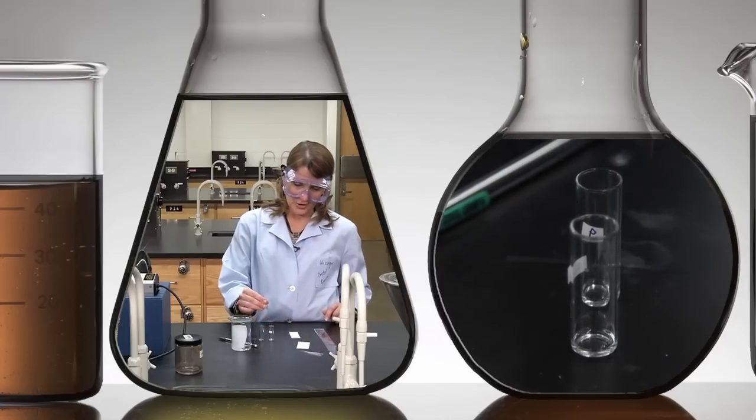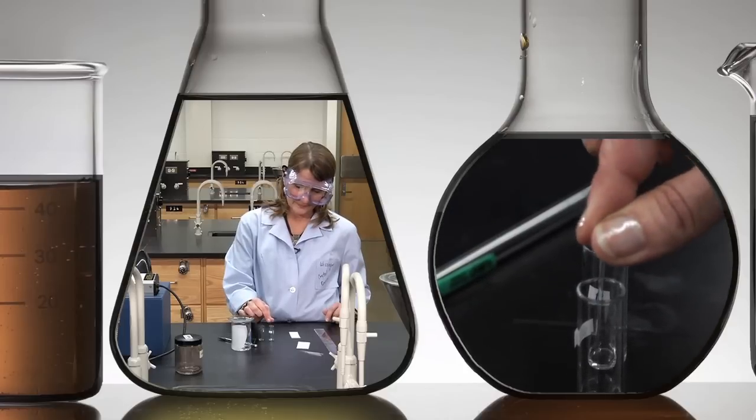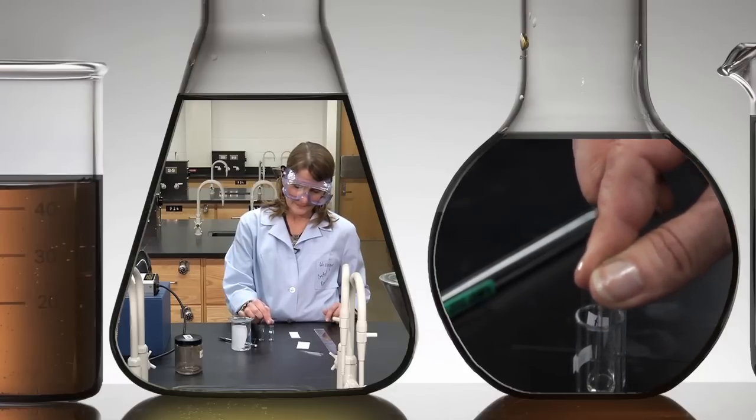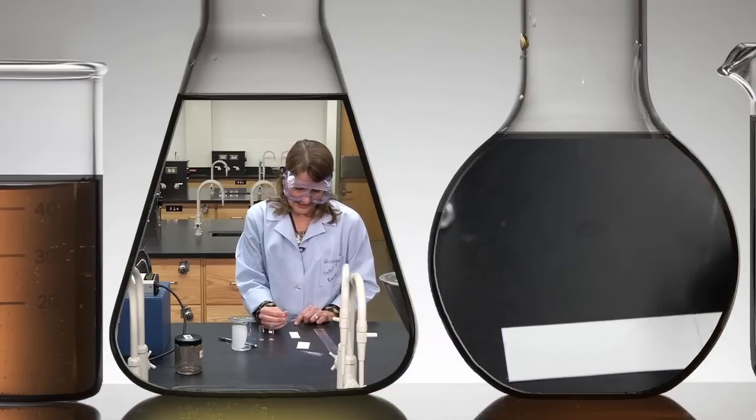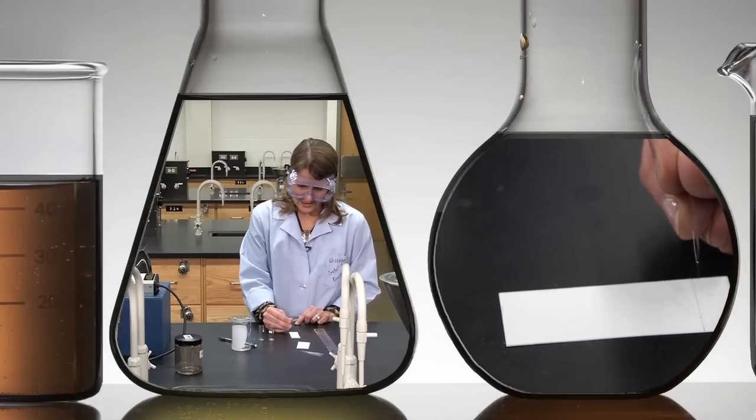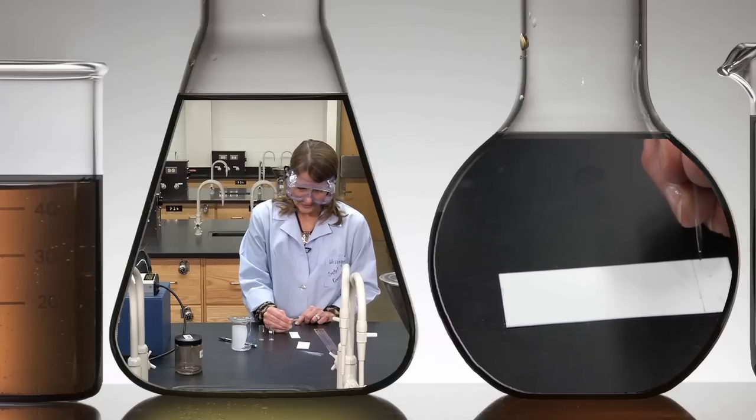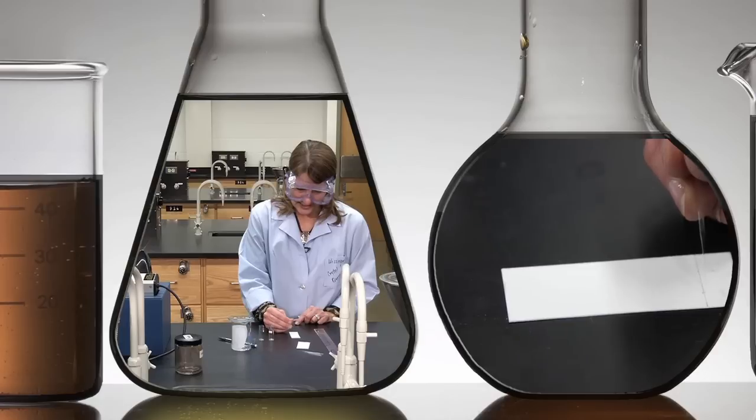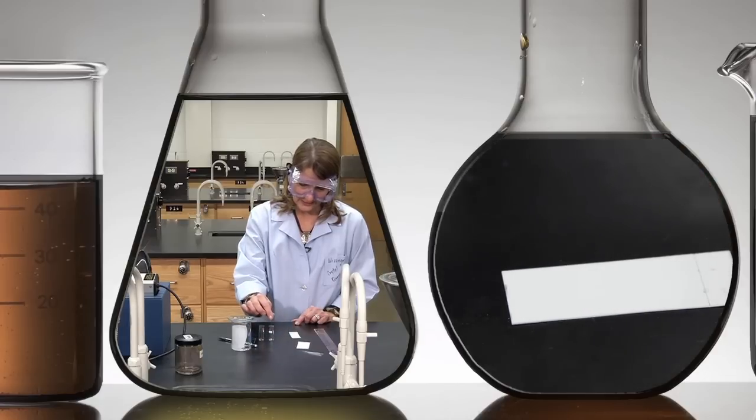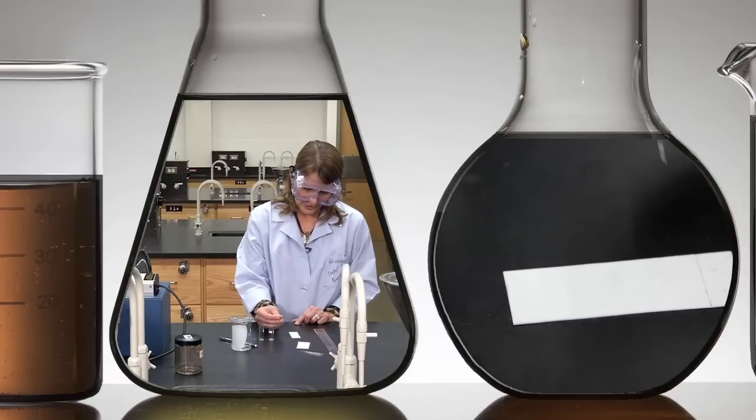Now we want to spot it on the plate. You draw up a small amount of the sample, place it on the dot that you've made, and you can see that the solvent spreads out. You just want to dab lightly to add the spot.